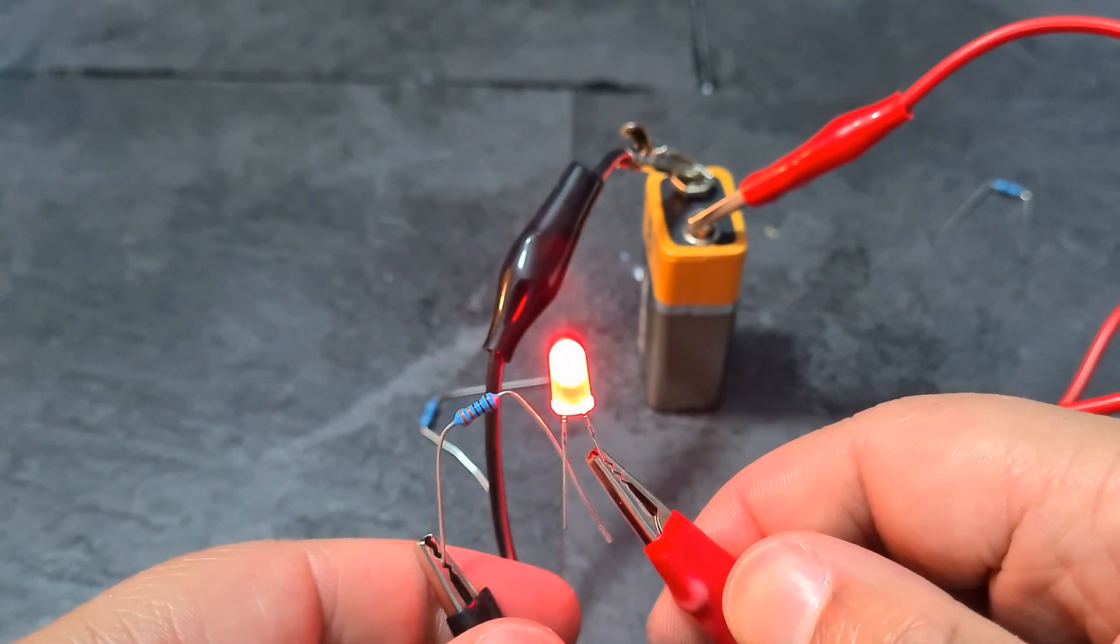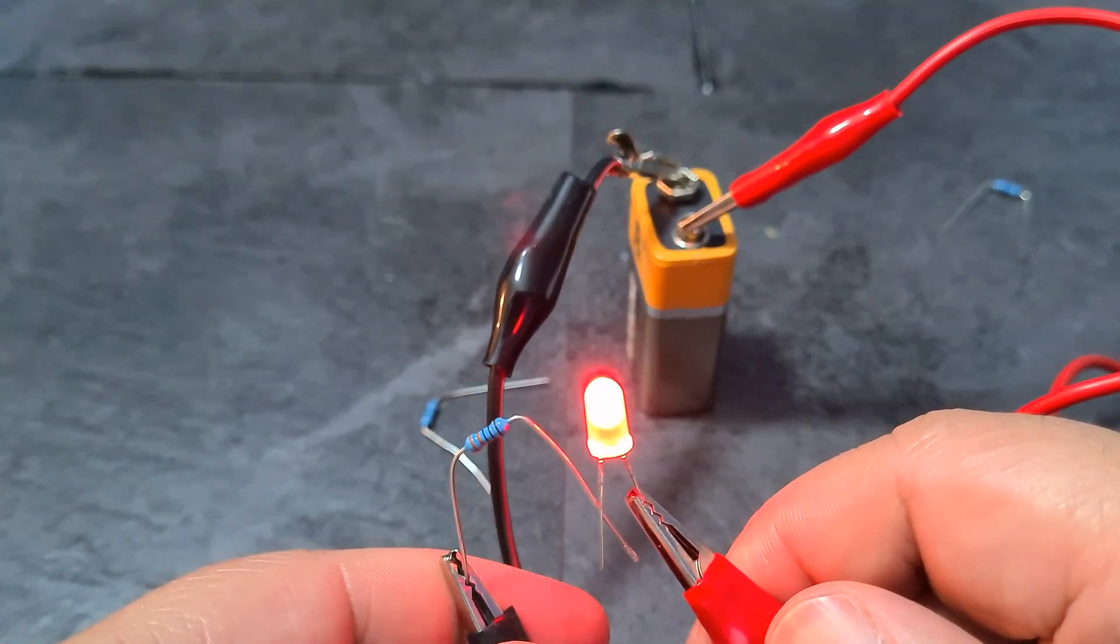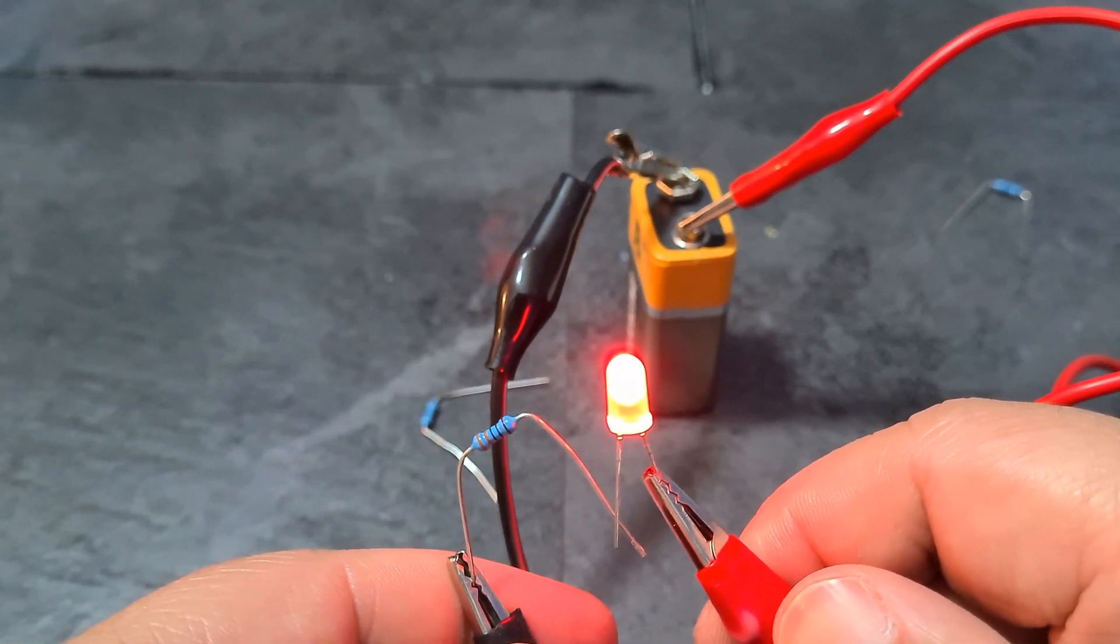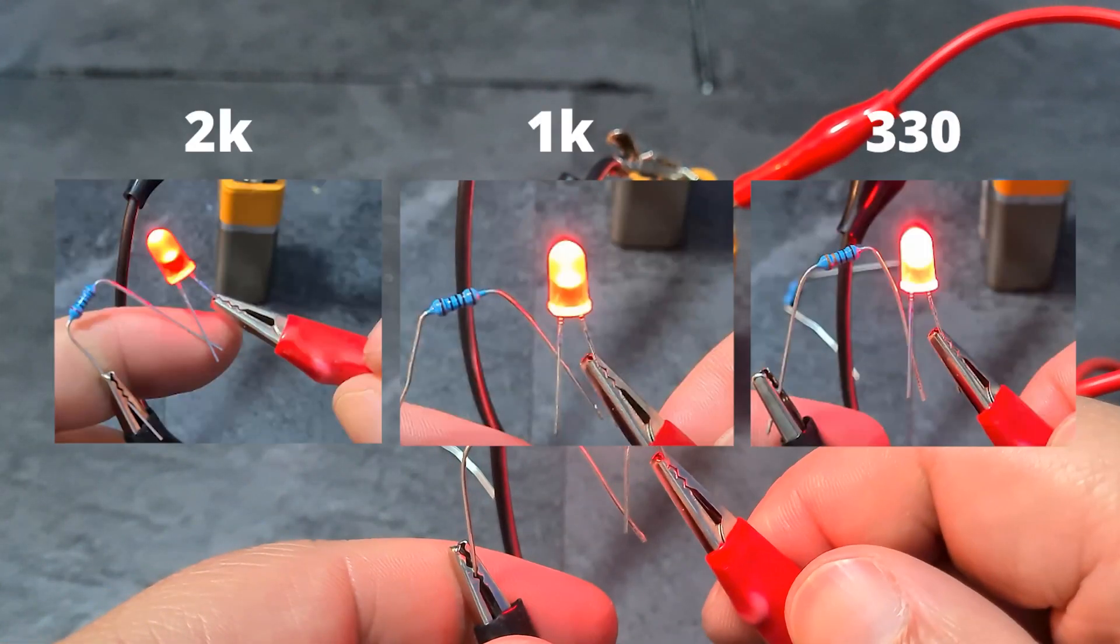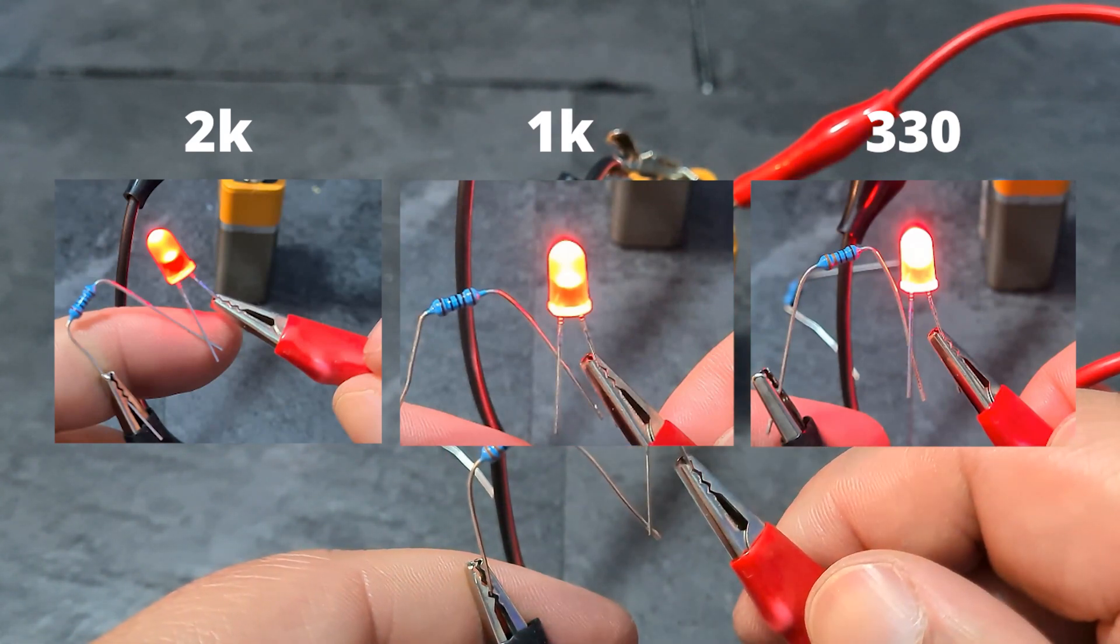So you can see there should be a fairly big difference in brightness, right, between the 2K, which is obviously supplying more resistance, hence less current going through the resistor. And now, here, we've got a higher amount of current going, so the LED is significantly brighter. And that's it. Super simple, right?